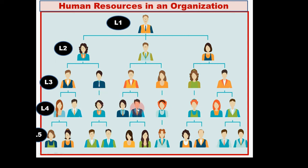At level four, one executive has one person, another has two, and so on. Under those persons, there are two more — that is level five. In any organization, human resources are divided into different levels. You can see up to five levels in any organization.